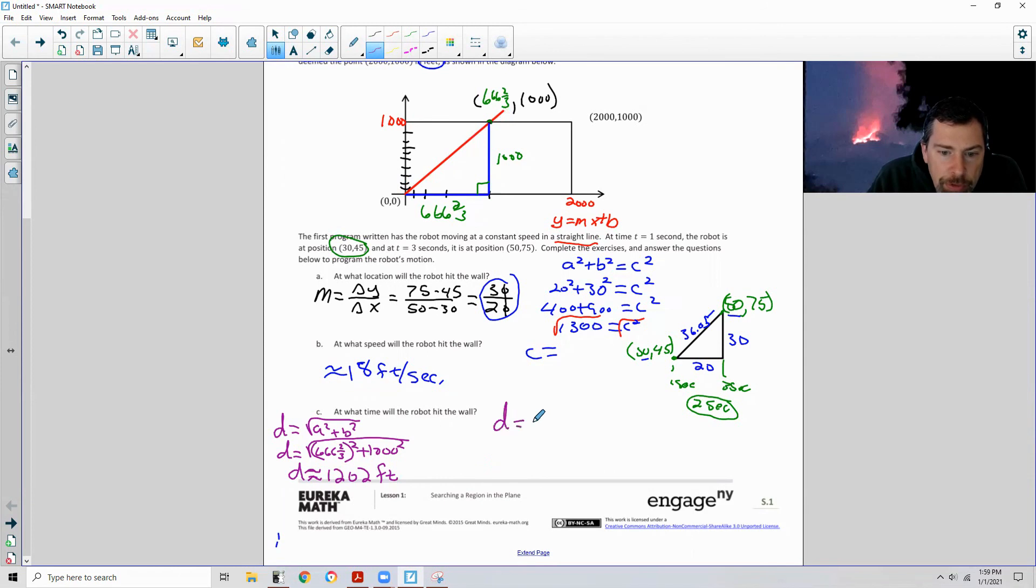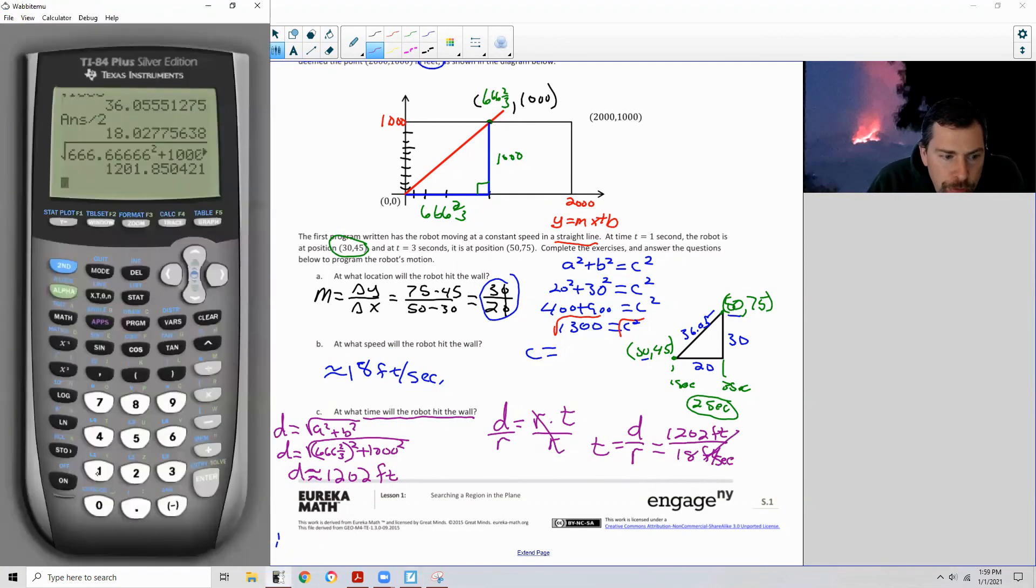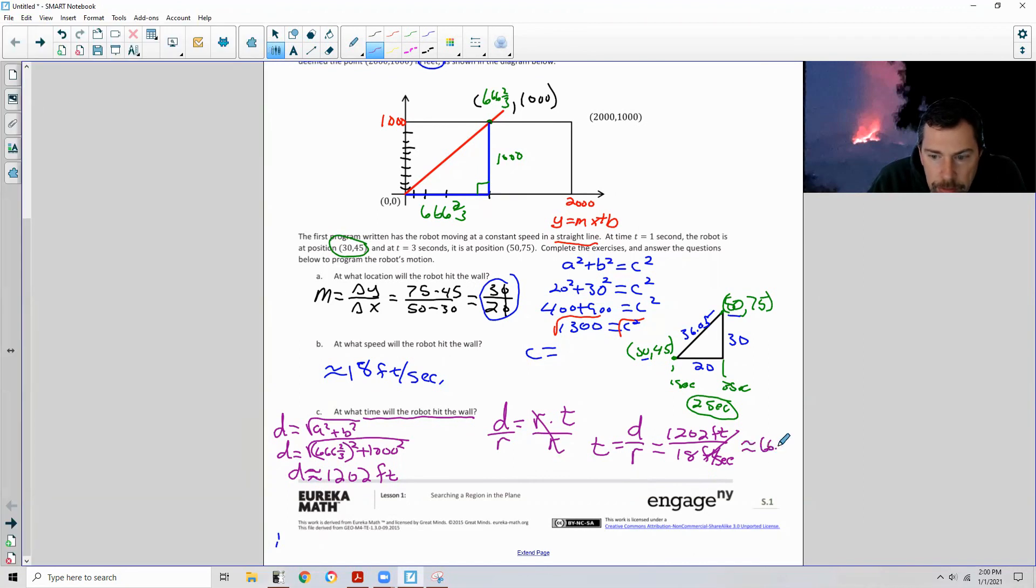Now distance equals rate times time. At what time will the robot hit the wall? We want to solve for T by dividing both sides by R. So then we get T equals the distance divided by the rate it's moving. We already know the distance is 1,202 feet and the rate is 18 feet per second. So the feet will cancel and 1,202 divided by 18 is 66.78 seconds. So just over a minute, a minute and seven seconds approximately is what time the robot will hit the wall.